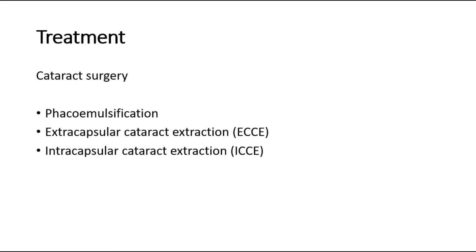The treatment of cataract is cataract surgery. It is indicated when the cataract has produced sufficient visual symptoms to reduce the patient's quality of life, and we don't have to wait until the cataract is ripened and causes major visual loss. There are a few types of surgery, including phacoemulsification, where the surgeon breaks down and removes the cataract fragments and replaces them with an intraocular lens implant, and also ECCE — extracapsular cataract extraction — where the whole lens is removed.